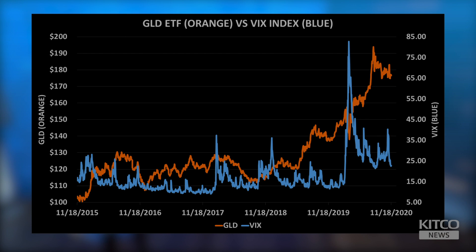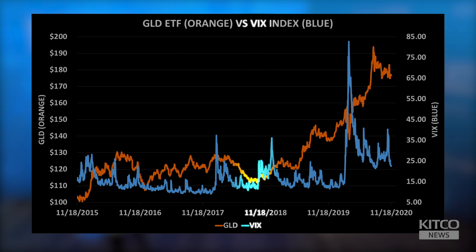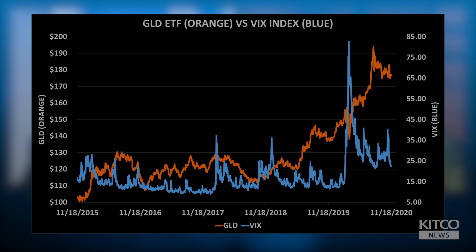The GLD, which I've used as a proxy for gold, is shown in orange, and the blue line indicates the VIX index. You'll see periods in the past, particularly from 2017 to 2018, when the correlation held, but it's more or less broken down this year. What do you think about gold as a safe haven asset in this sense — does this definition hold?